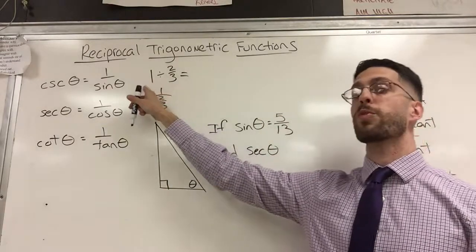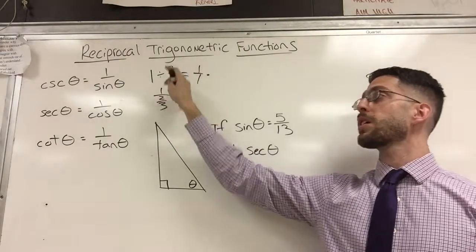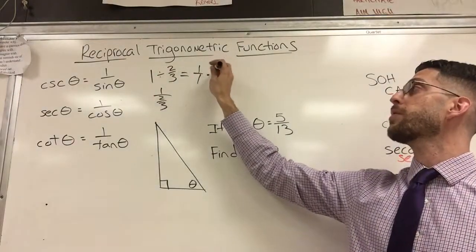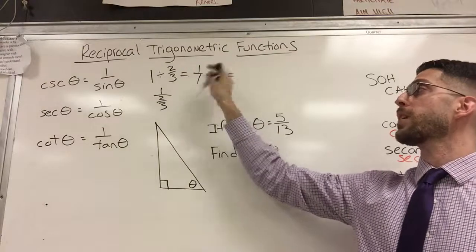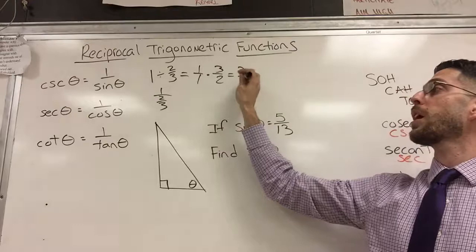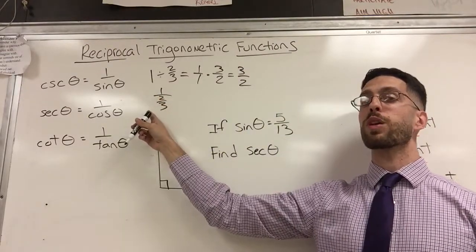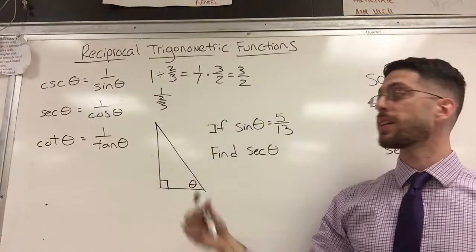So one can be rewritten as a fraction one over one times, let me flip the two thirds as three halves. And guess what? That's now one times three is three. One times two is two. And it's three halves. So one over something really just means flip it. That's it.